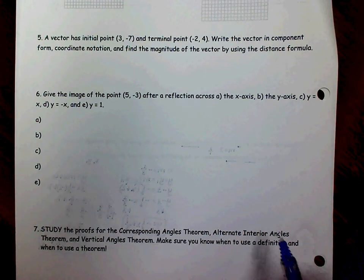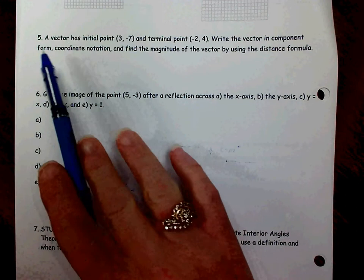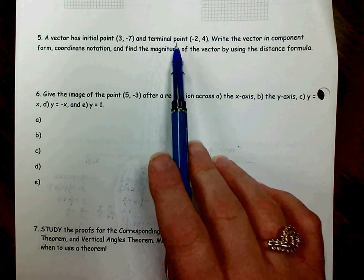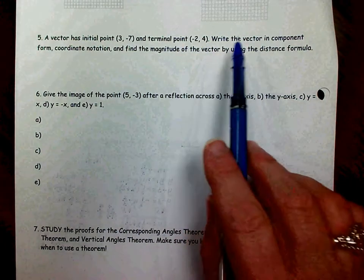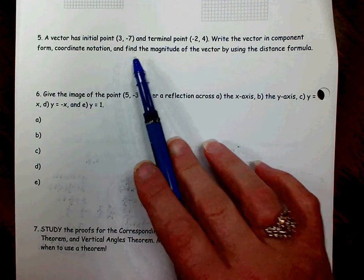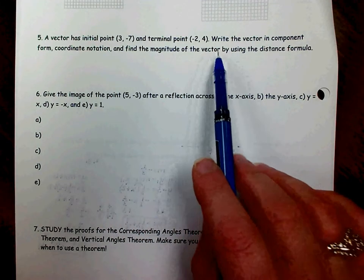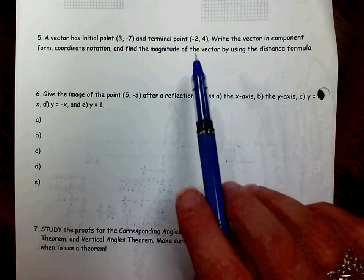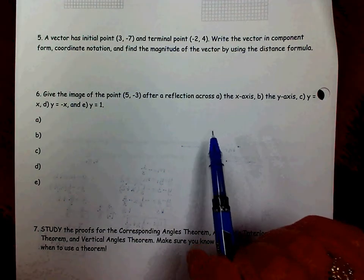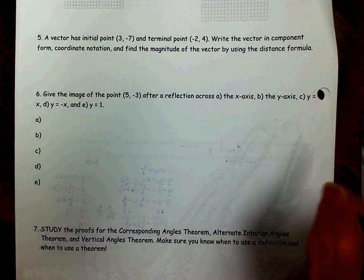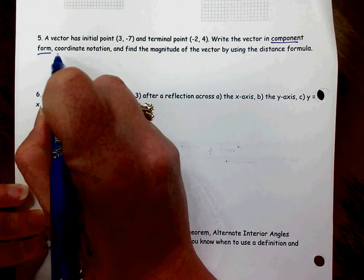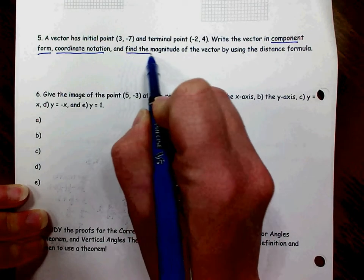This is number 5. It says a vector has initial point (3, -7) and terminal point (-2, 4). Write the vector in component form, coordinate notation, and find the magnitude of the vector by using the distance formula. So very important that you're reading your directions and doing all parts. There are three answers required for number 5: writing the vector in component form, in coordinate notation, and finding the magnitude.